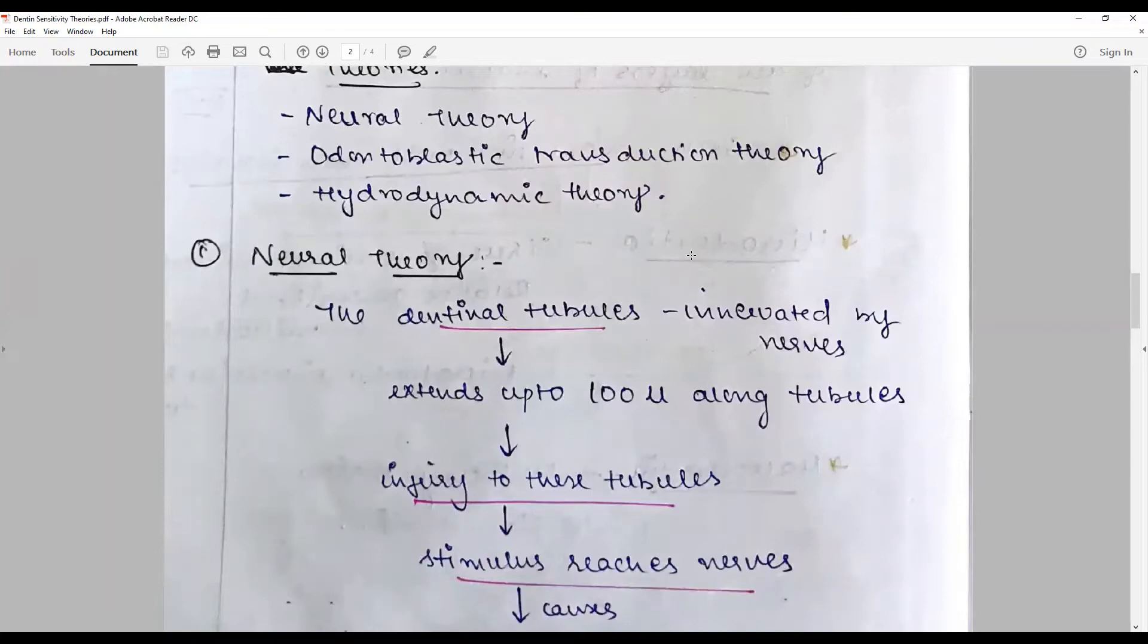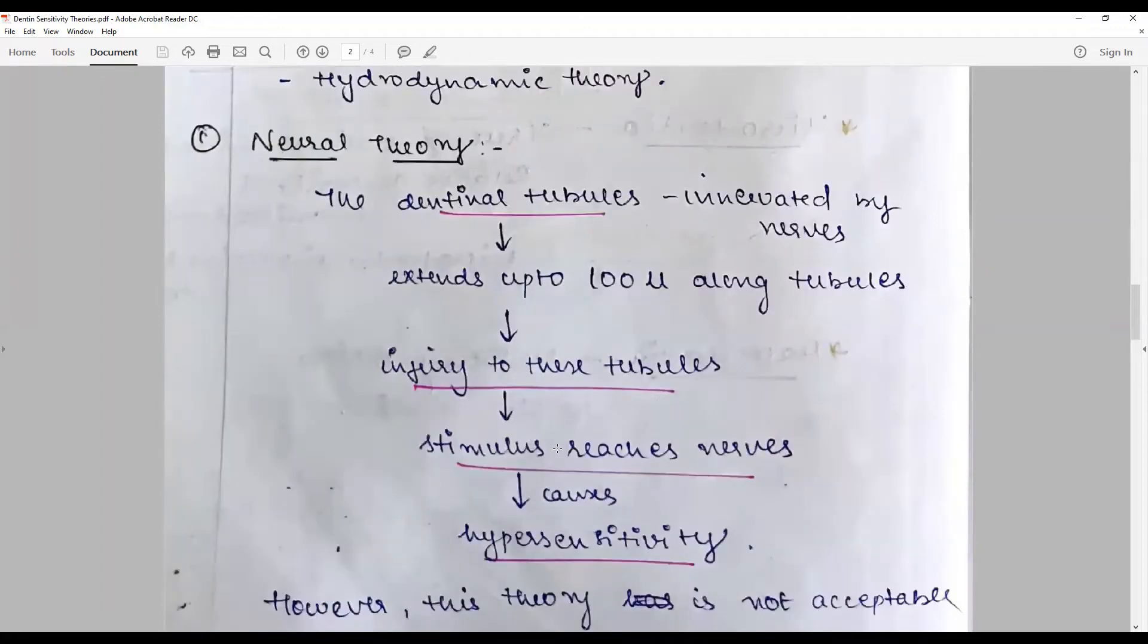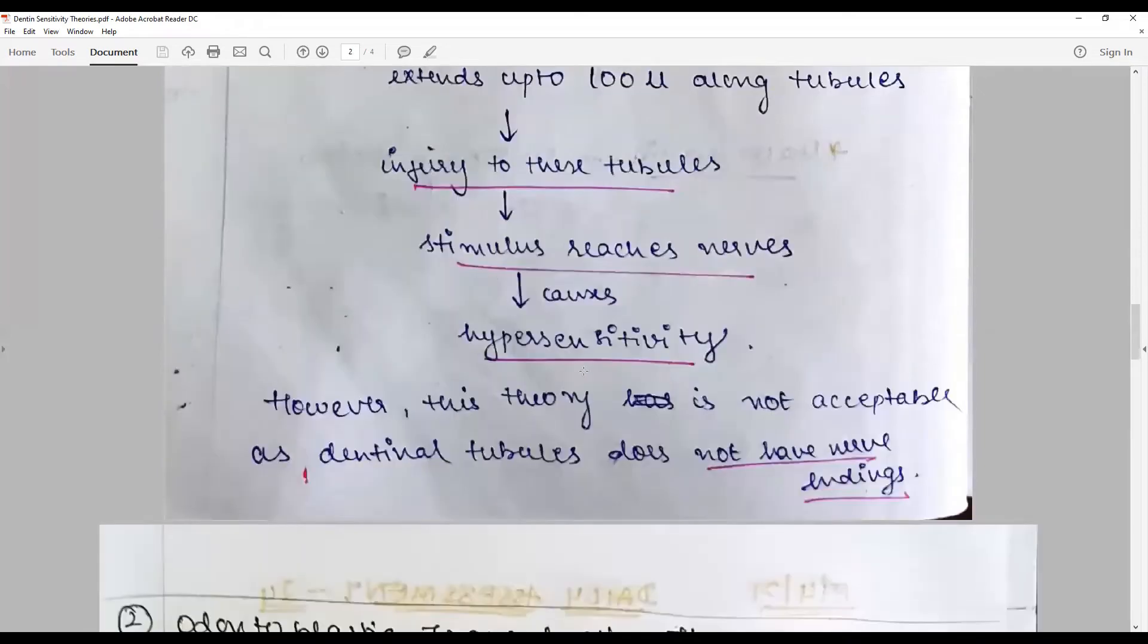When there is a change in the external environment as ions, there is injury to these tubules and the stimulus reaches the nerves, causing hypersensitivity. However, this theory is not acceptable because microscopy and advances in staining have revealed that the dentinal tubules do not have any nerve endings.